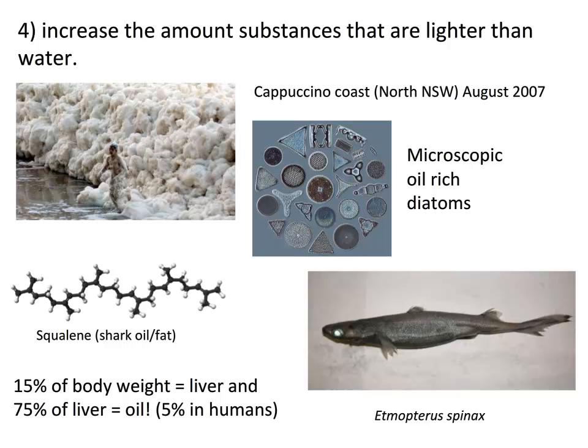Another strategy is increasing substances lighter than water. Diatoms — microscopic algae — contain lots of oil; the foam seen at the seaside after storms is the froth from diatoms breaking up and releasing oil, forming an emulsion. Sharks are also a great example: 15% of a shark's body weight is liver, and 75% of that liver is an oil called squalene. In our bodies, only 5% of body weight is liver.